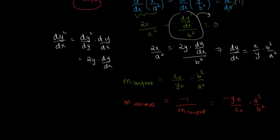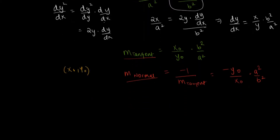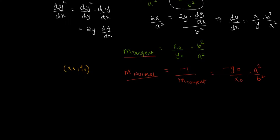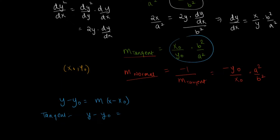Now we have the slopes of both lines, and we know both lines pass through (x₀, y₀). We use the point-slope form of the straight line equation: y minus y₀ equals slope times (x minus x₀). Writing the tangent equation: y minus y₀ equals (x₀ b squared over y₀ a squared) multiplied by (x minus x₀).